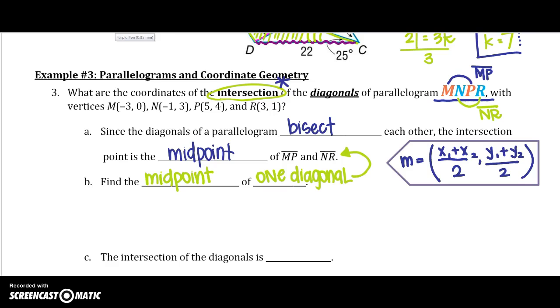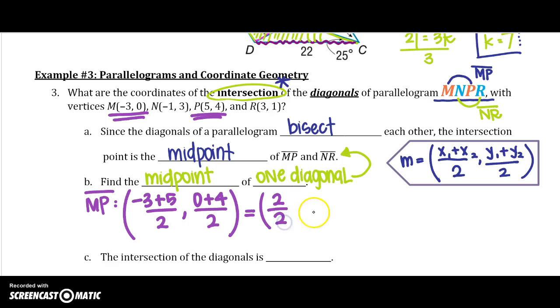Alright, so I am going to pick MP. You can pick NR if you want to and see if you can get the same answer. So I would say x1 plus x2 divided by 2 and y1 plus y2 divided by 2. It doesn't matter which one is 1 and 2. Just make sure they are the same for both. Negative 3 plus 5 is positive 2 over 2. And 0 plus 4 is 4 over 2, reducing that down to 1, 2. Now, if we would graph this parallelogram and draw the diagonals, we would see that both diagonals actually intersect at 1, 2, the midpoint.